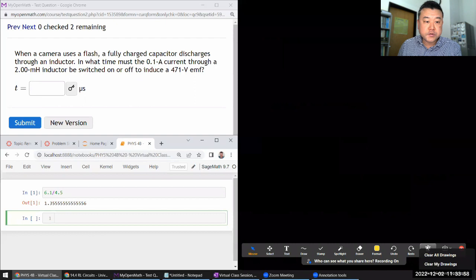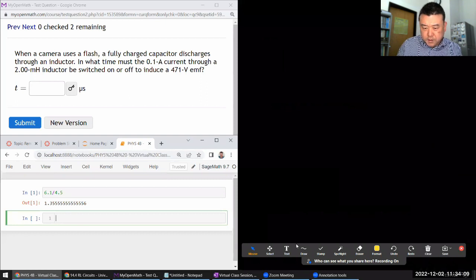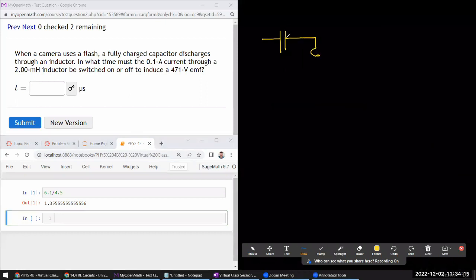Next question. It says when a camera uses a flash, a fully charged capacitor discharges through an inductor. So let me draw the circuit of the capacitor with inductor. In what time must the 0.1 ampere current through an inductor of inductance 2.0 millihenry be switched on or off to induce 471 V EMF? That kind of sounds backwards.